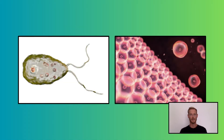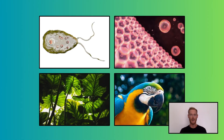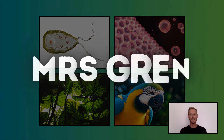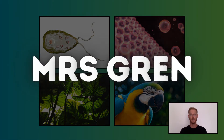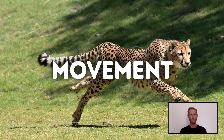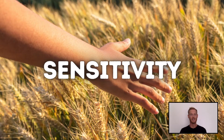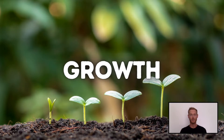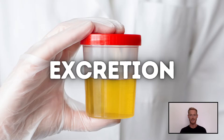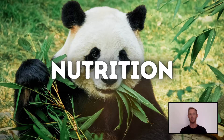All living organisms, whether single-celled or multicellular, plants or animals, possess a certain set of characteristics, which can easily be remembered using the acronym MRS GREN. They are movement, respiration, sensitivity, growth, reproduction, excretion, and nutrition.